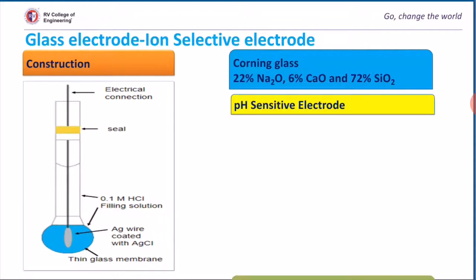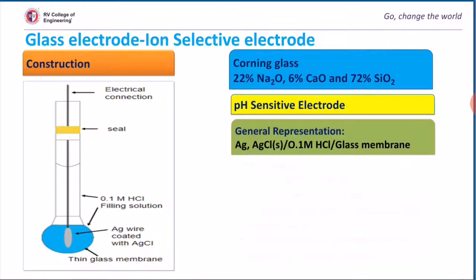This glass electrode is sensitive toward H+ ions, hence it is called pH sensitive electrode. The general representation of glass electrode is as shown in the slides.